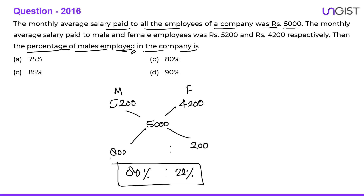So 800 and 200 — total there are 1000 employees, so 80% are male and 20% are female. The percentage of male employees is 80%, so option B is the correct choice.